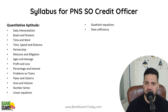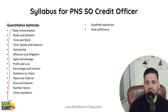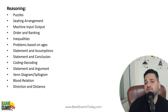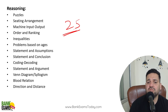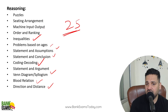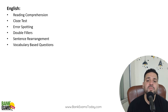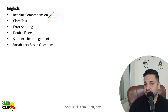For Quant, Reasoning and English, it is the same syllabus as other bank exams. In Quantitative Aptitude: data interpretation, boats and streams, time and work, time-speed-distance, partnerships, mixtures and allegations, ages and averages, profit and loss, percentages, problems based on trains, pipes and cisterns, etc. In Reasoning, out of 25 questions: inequalities, syllogisms, blood relations, direction sense test, coding-decoding, statements and assumptions, problems based on ages, machine input-output, and puzzles and seating arrangement. In English: reading comprehension, grammatical error spotting, double fillers, and vocabulary-based questions.